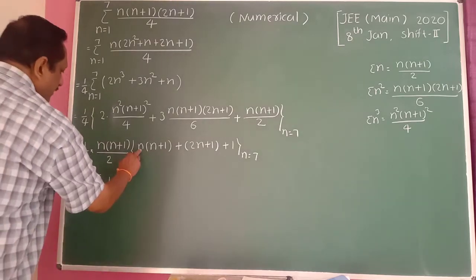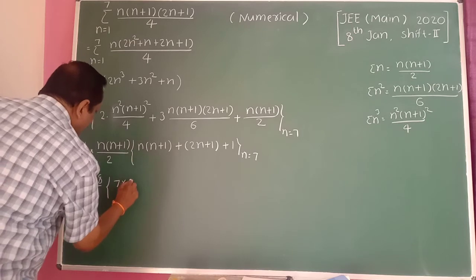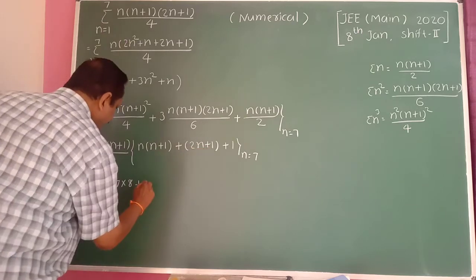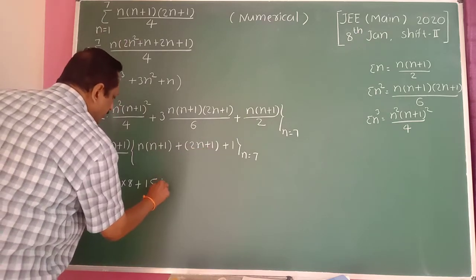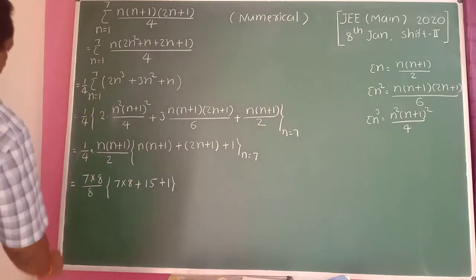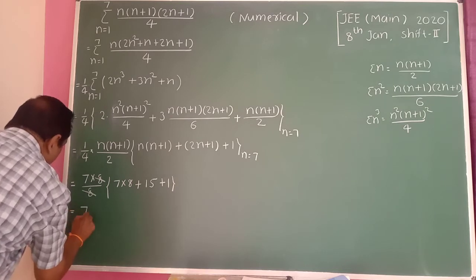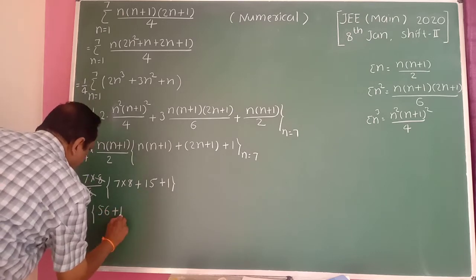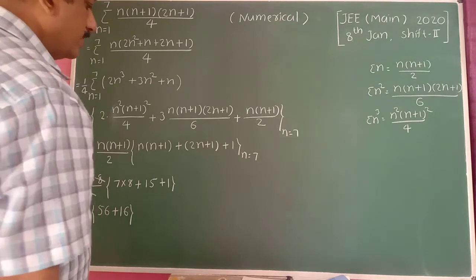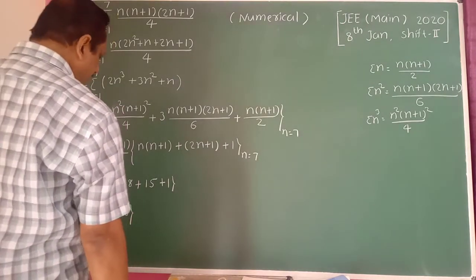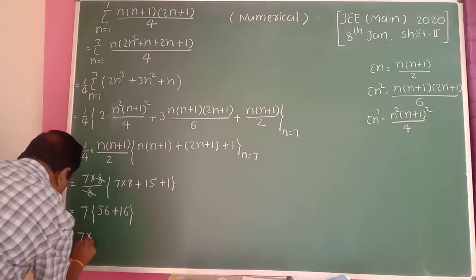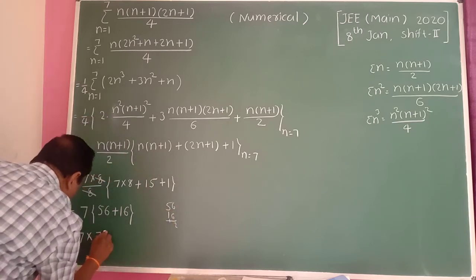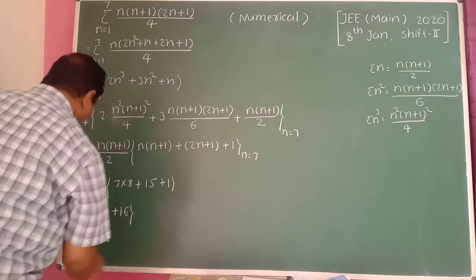Then n into n plus 1 gives 7 into 8, and 2 times 7 plus 1 becomes 15, plus 1 gives 16. The 8s cancel, leaving 7 into 8, so 56. Then 15 plus 1 is 16, giving 56 times... and 72 into 7.